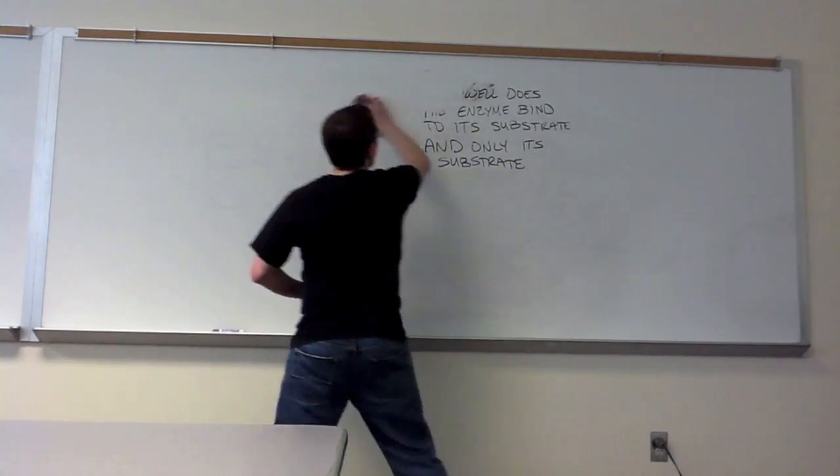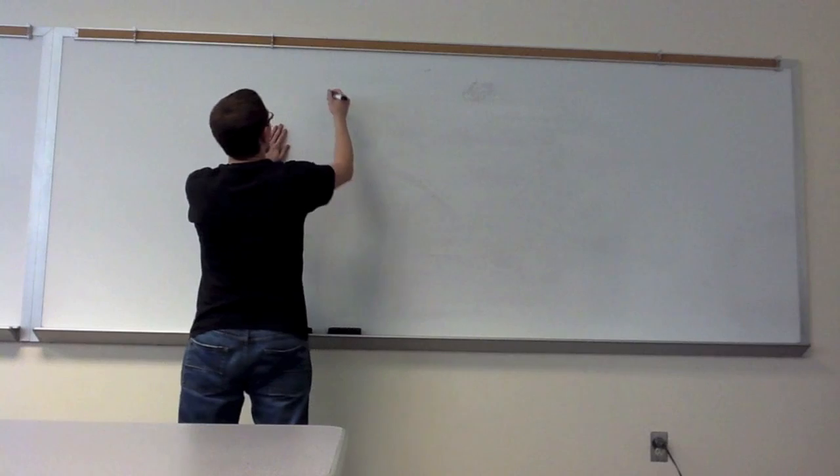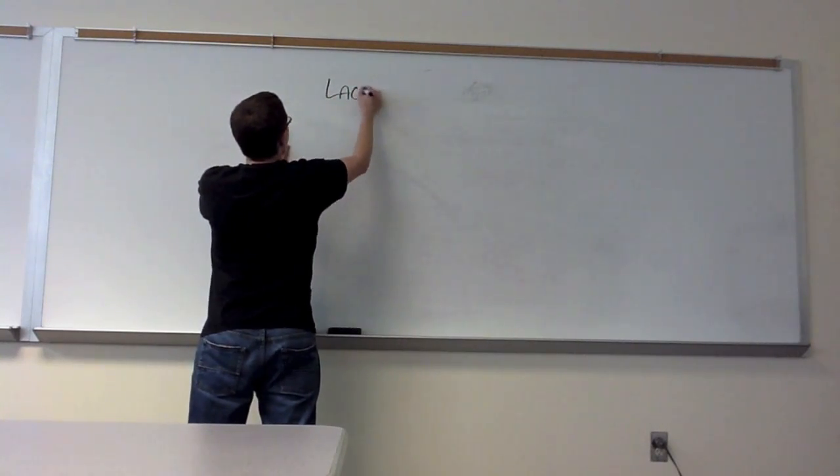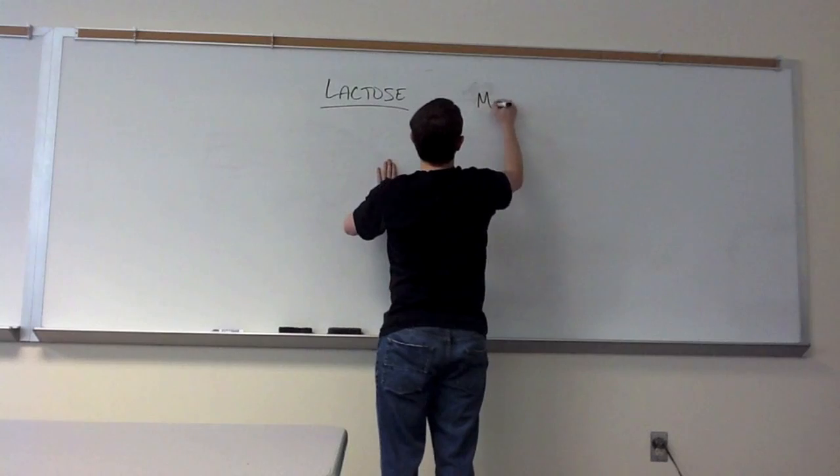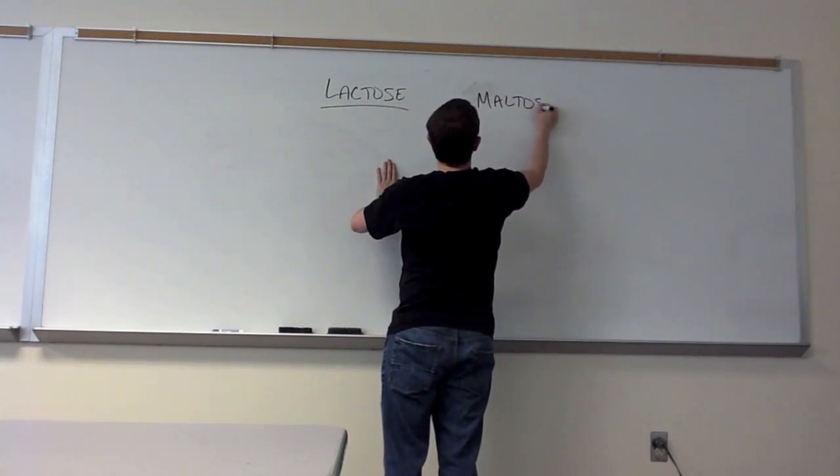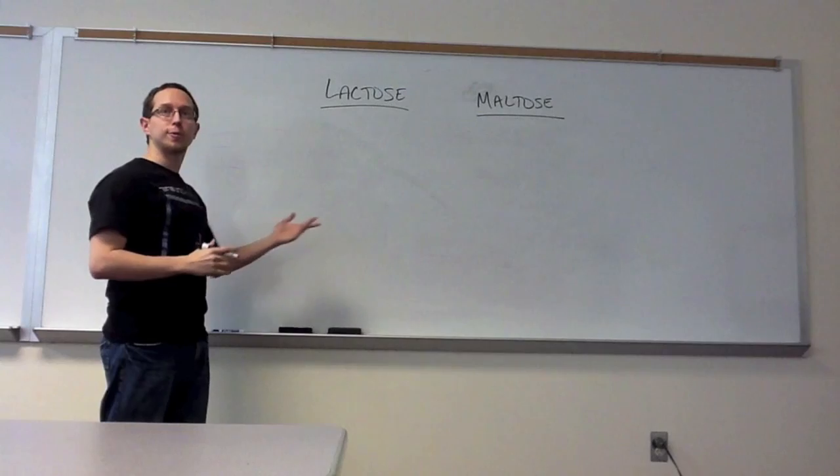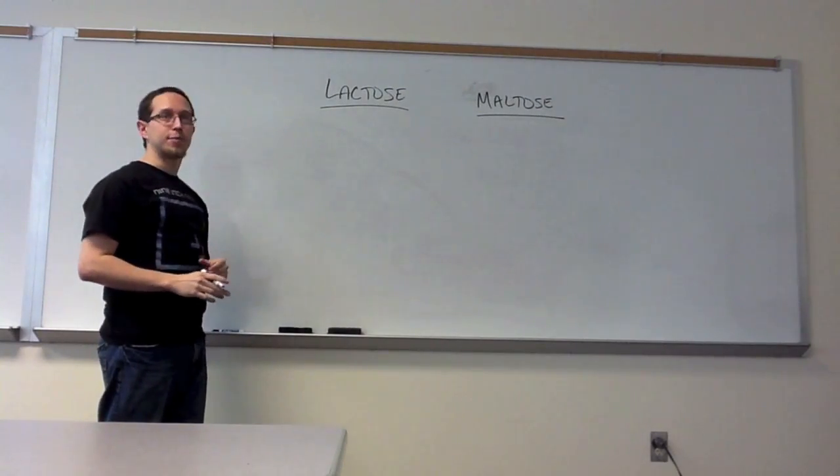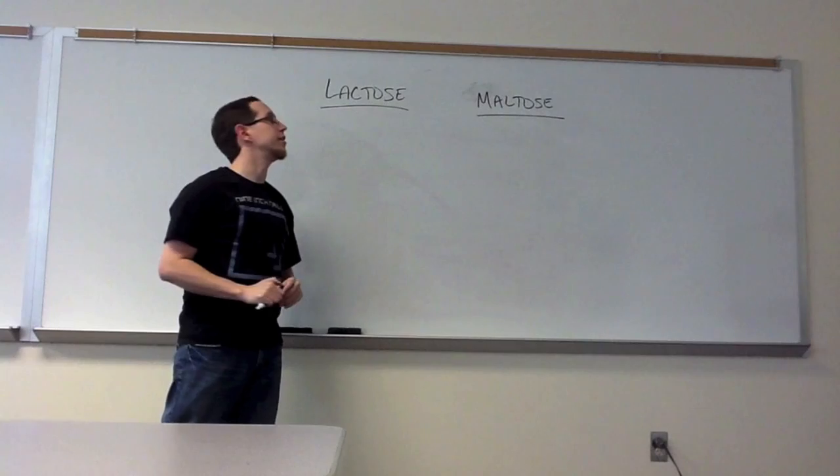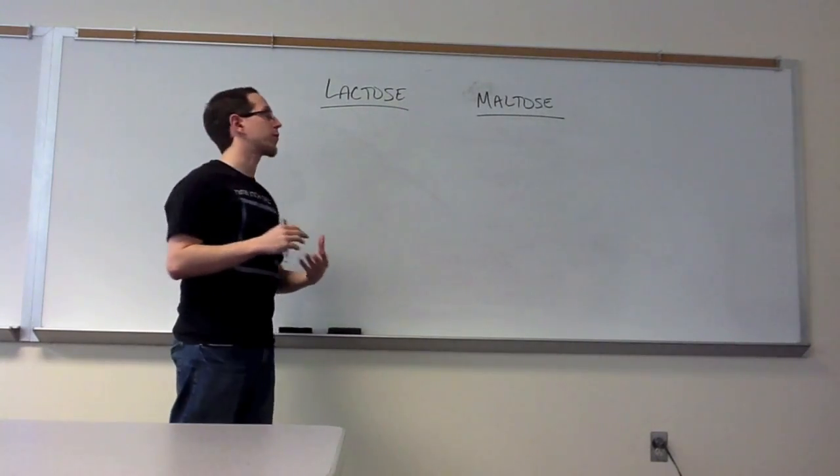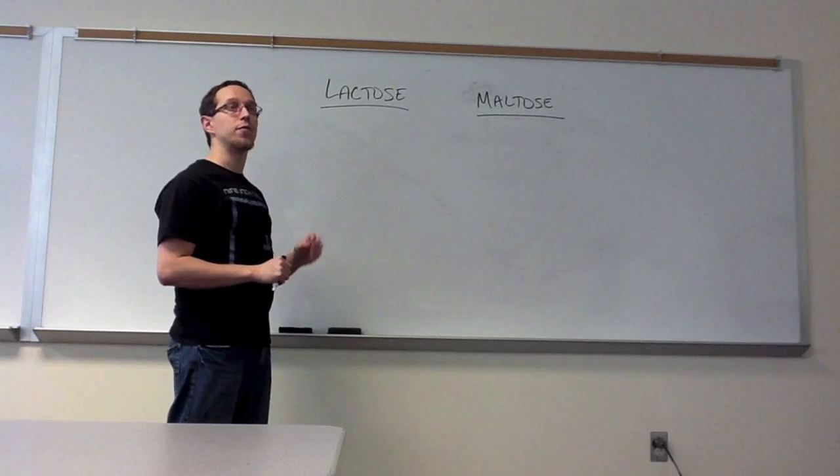The two substrates that we analyzed in this particular exercise were lactose and maltose. Now, I'm not going to draw their structures up here because you have them in your lab manual. This is experiment 7.3. Look at how closely these two molecules actually look from a structural standpoint. I think you'll find that they're very, very similar.